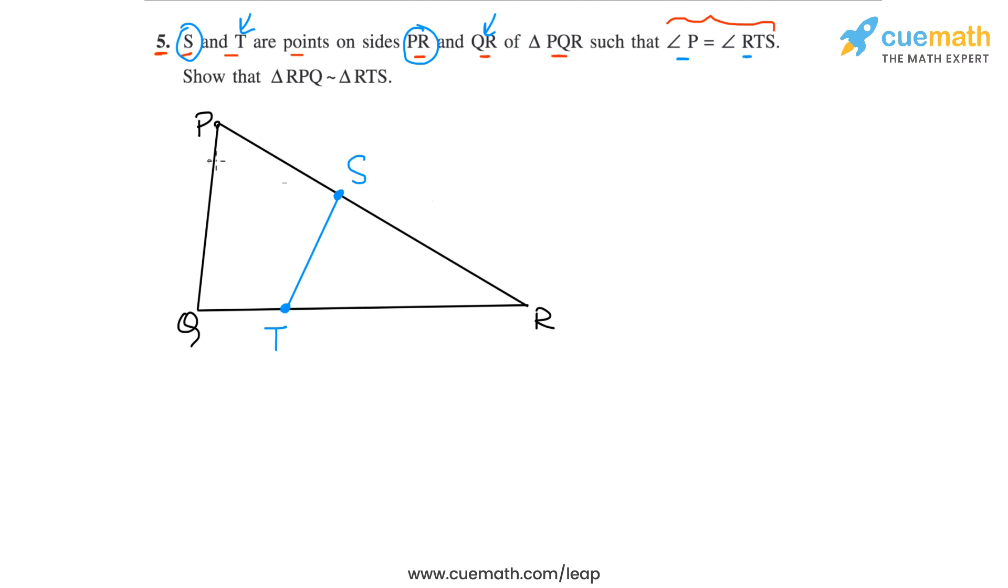And we are now told that angle P is equal to angle RTS, so this angle here, angle P, is equal to angle RTS. And we have to show that triangle RPQ is similar to triangle RTS.